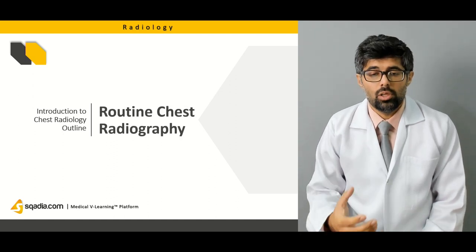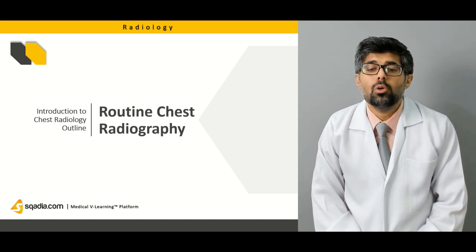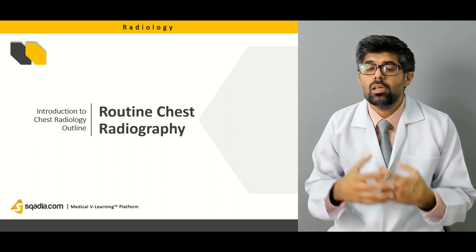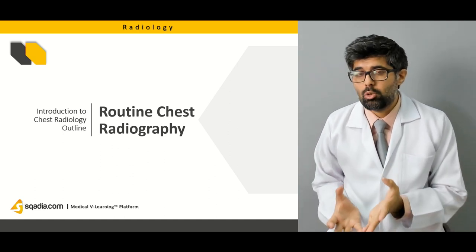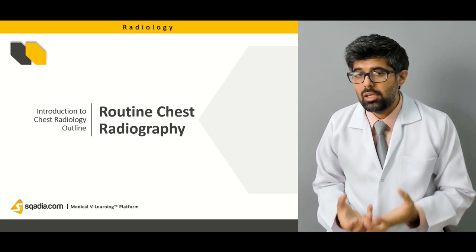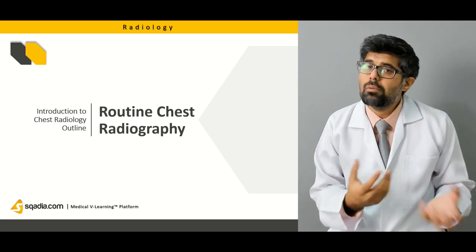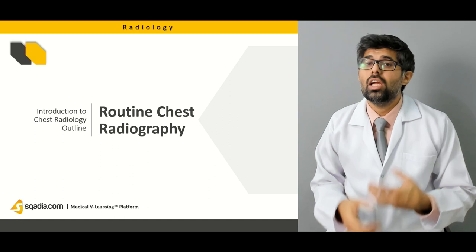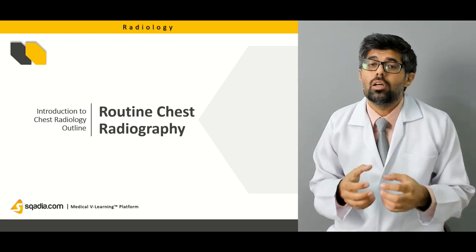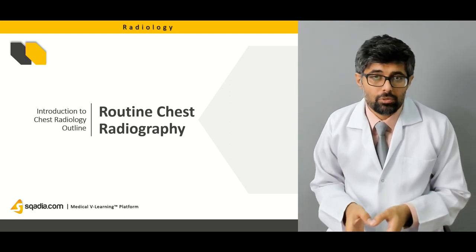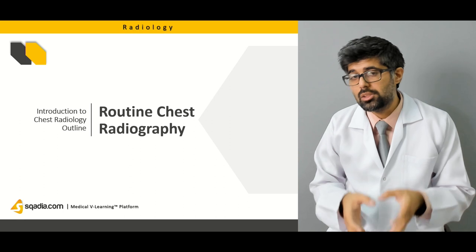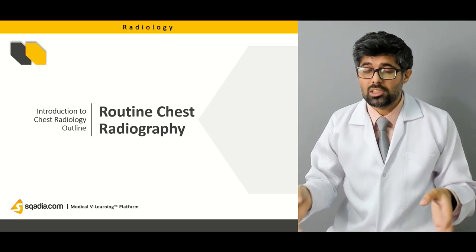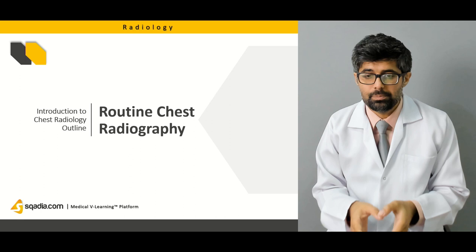Next we'll learn about routine chest radiography — specifically the PA view, which is the chest radiography that is routinely done. We'll learn the PA view in very detail, covering all the viscera and organs, especially the heart, the lungs, and the mediastinum.